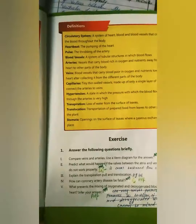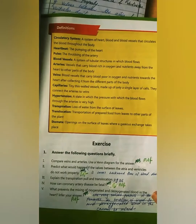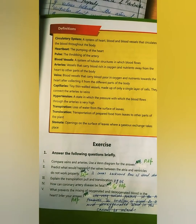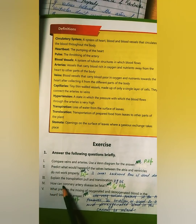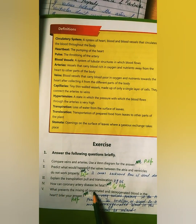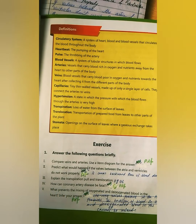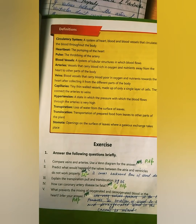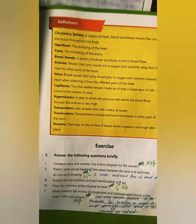On page number 29, the next question is: How can coronary artery disease be fatal? Fatal means it can cause death.